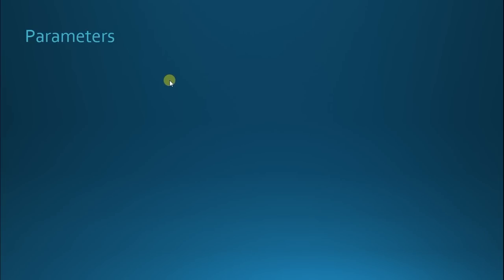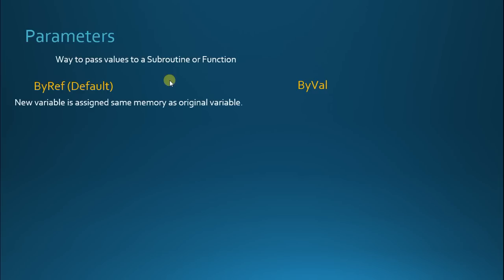Parameters are a way to pass values to a subroutine or function. You can use one of two different methods of passing these parameters. You can use the BYREF keyword, which is the default, or you can use BYVAL. BYREF stands for By Reference, BYVAL stands for By Value. When you use the BYREF keyword, a new variable is assigned the same memory as the original variable.